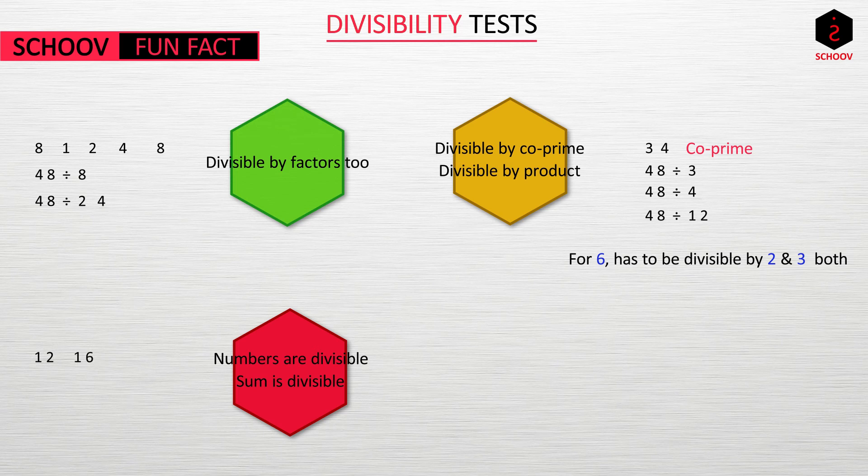Take 12 and 16. Both are divisible by 4, so their sum, 28, is also divisible by 4. However, sum of two numbers which are not divided by 4 can still be divided by 4. For example, 14 plus 6 is 20 which is divided by 4 but neither 14 nor 6 are.